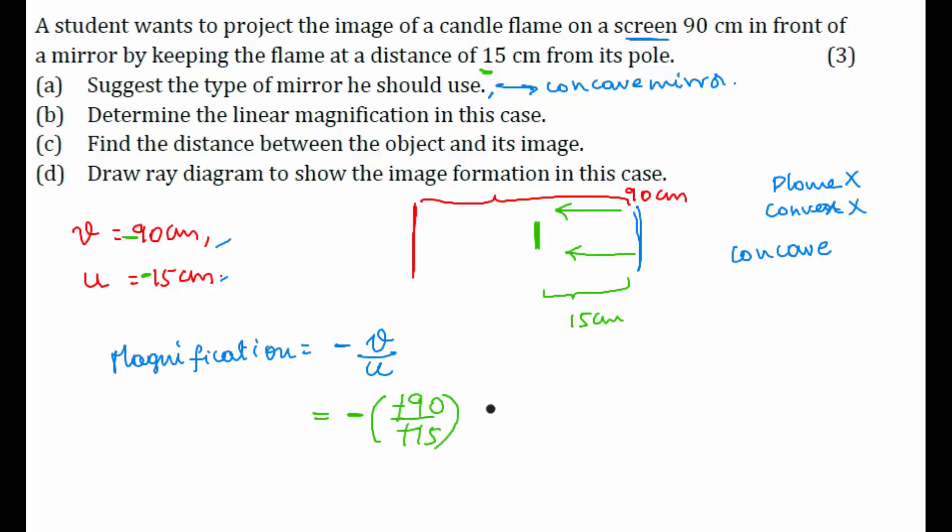So, if we cancel these two, what we will get? Minus 6. So, magnification is minus 6. What is this minus 6 indicating? It is indicating that the image is inverted. So, image is inverted. So, second question answer is minus 6.